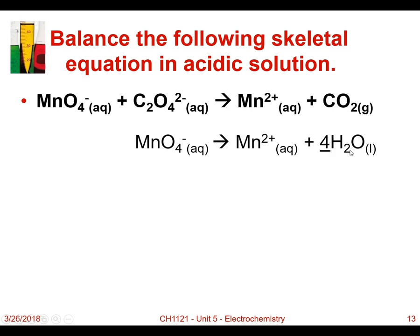The next step, 2C, is to balance for hydrogen by adding hydrogen ion to the side that needs it. Here we see the left side needs hydrogen ion. It needs 8 hydrogens.